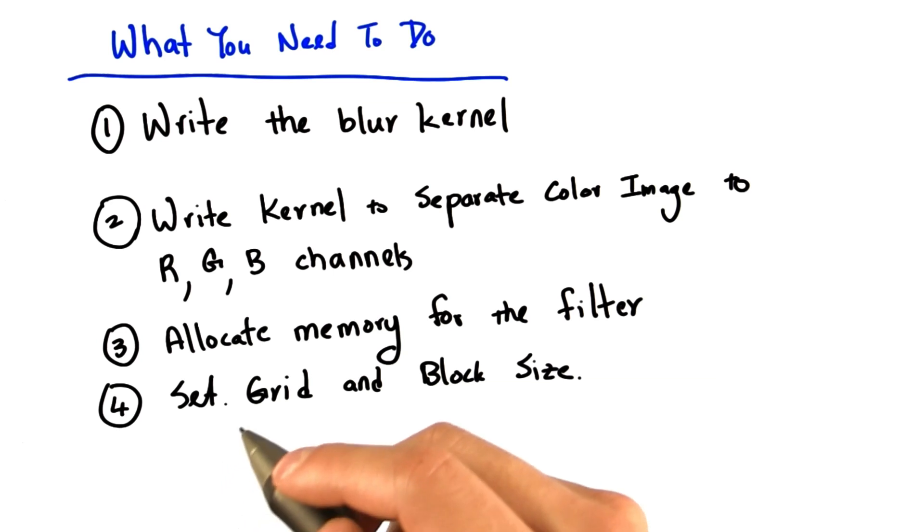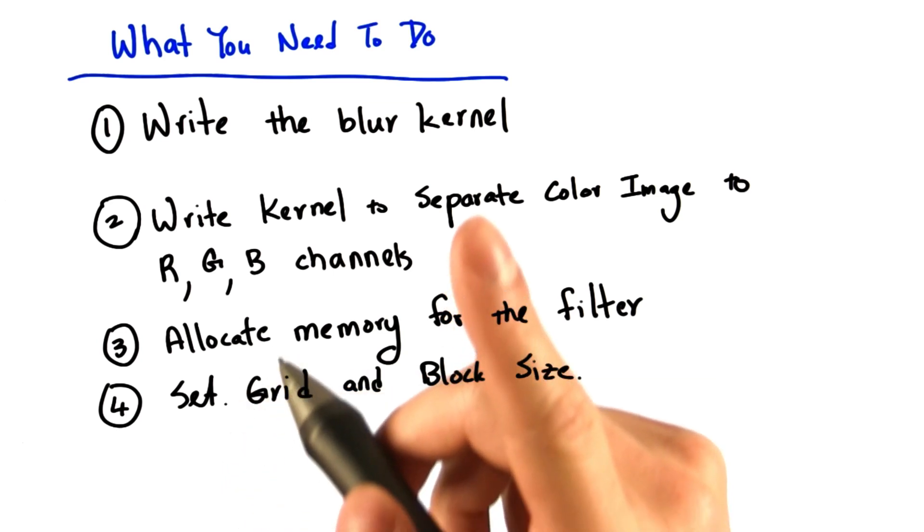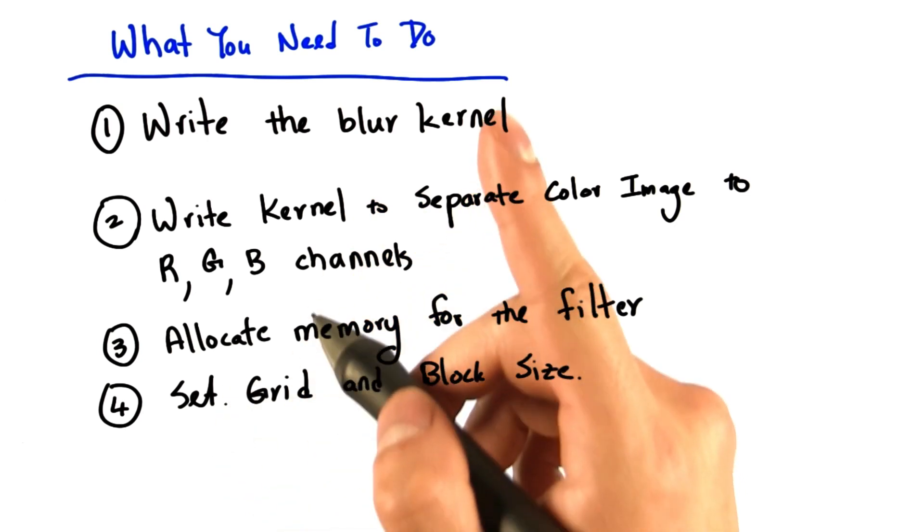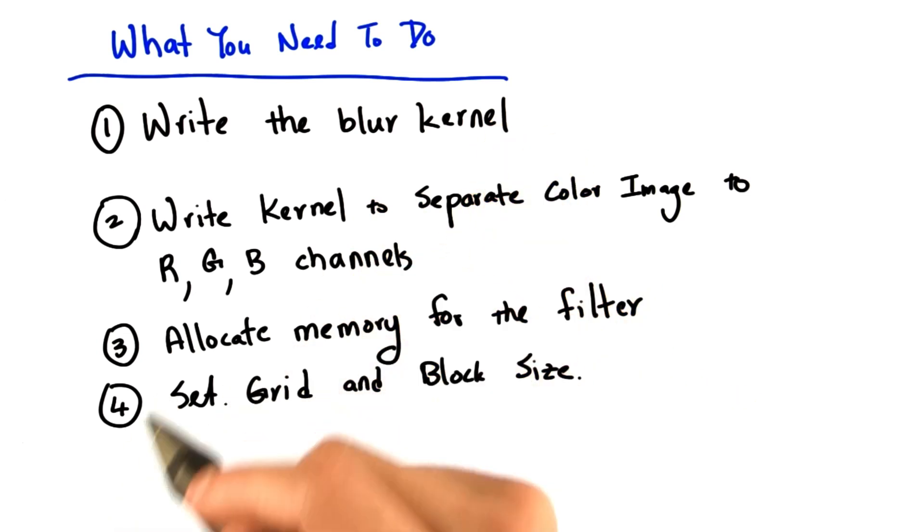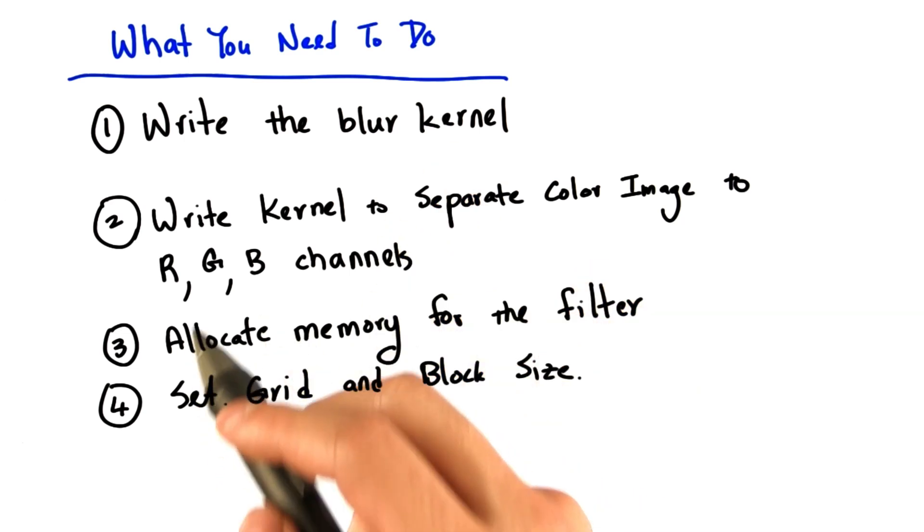Your submission will be evaluated based on correctness and speed. But we recommend that you focus on correctness first. Then after your blurring kernel is running correctly, then we recommend that you try to make it run faster.